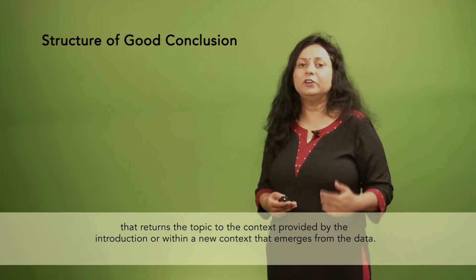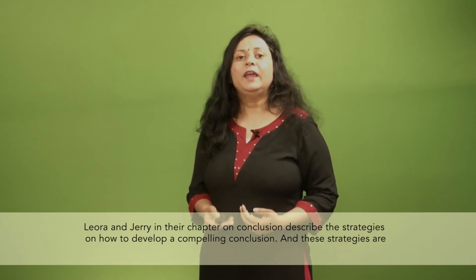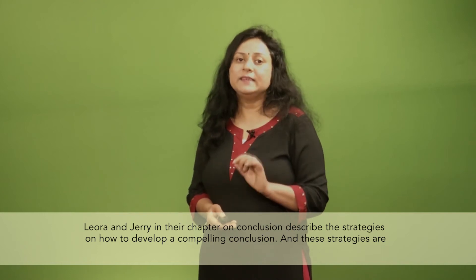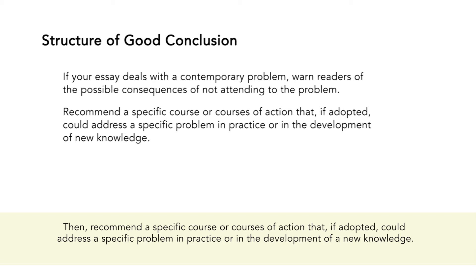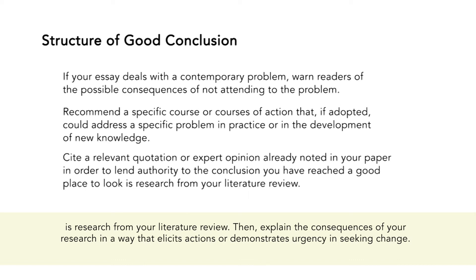Leora and Jerry, in their chapter on conclusion, describe strategies on how to develop a compelling conclusion. These strategies are: if your essay deals with a contemporary problem, warn the reader of the possible consequences of not attending to the problem. Then, recommend a specific course or courses of action that, if adopted, could address a specific problem in practice or in the development of new knowledge. Cite relevant quotations or expert opinion already noted in your paper in order to lend authority to the conclusion you have reached — a good place to work is research from your literature review.